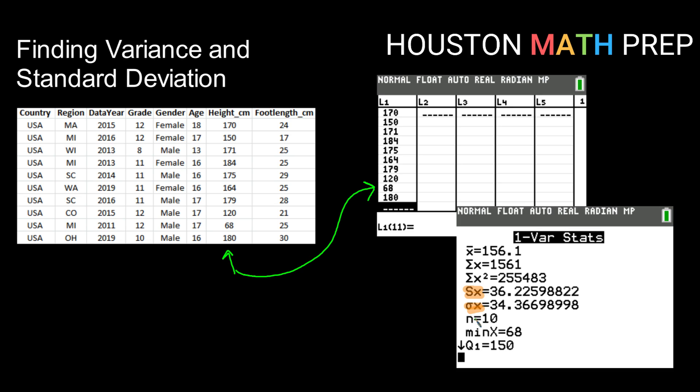If you notice the values, they are a little bit different. Thinking back to those formulas, that's because they are calculated slightly differently, with the population standard deviation being divided by n and the sample standard deviation being divided by n minus one.